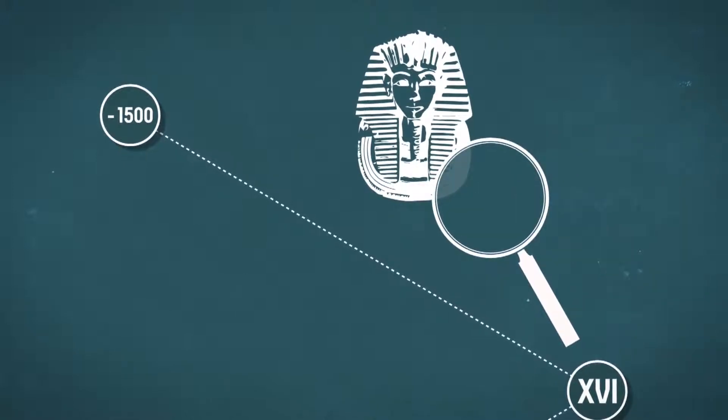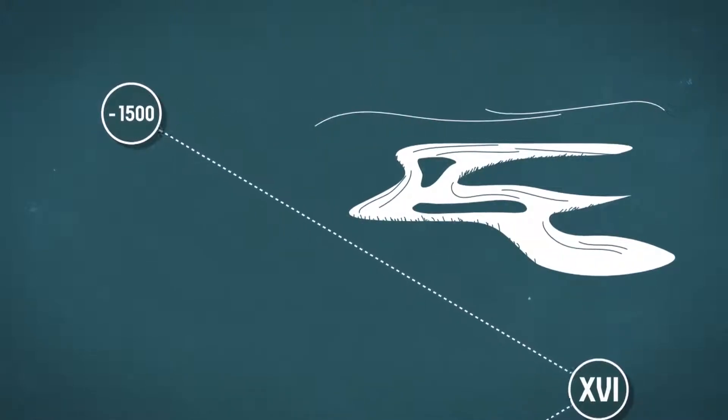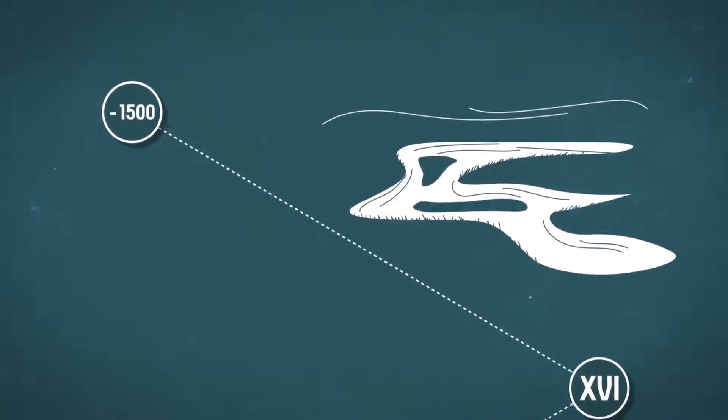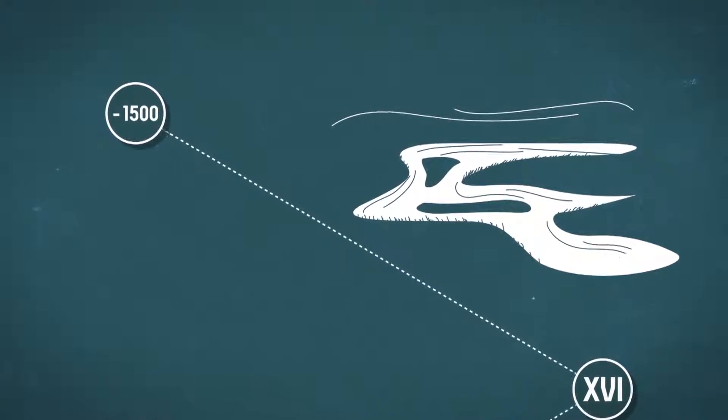DNA tests run on Tutankhamun's mummy revealed that he was suffering from malaria at the time of his death. It was thought that the disease came from marshlands and areas where the air was foul.